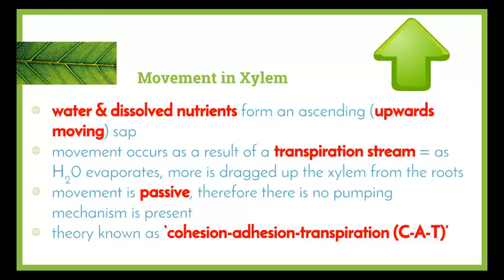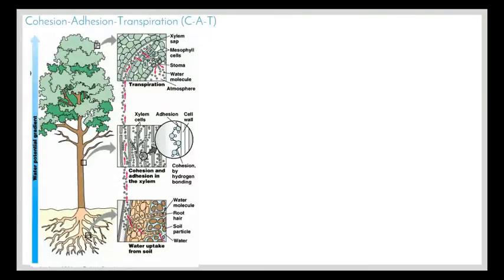In the xylem, water and dissolved nutrients form an ascending sap, meaning water is drawn from the bottom and moves upward toward the top of the plant. Movement occurs as a result of a transpiration stream — as water evaporates out of the leaves, more water is drawn into the xylem from the roots. This movement is passive, requiring no energy and no pumping mechanism, unlike in animals where the heart pumps substances around the body. The theory is known as the cohesion-adhesion-transpiration, or CAT, theory.